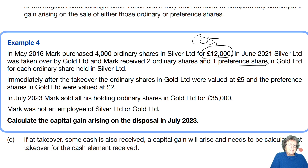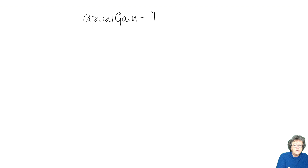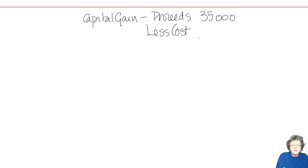Immediately after the takeover, the ordinary shares are worth £5 and the preference shares are worth £2. He then sold the ordinary shares and those are the proceeds. We know what the proceeds are — it's the cost of £12,000 that we need to do some calculations on. Let's have a look at how that works in reality. We're going to start with the capital gains computation. We know the proceeds are £35,000 from the question, less the cost — which we're not sure of yet — gives us a gain.